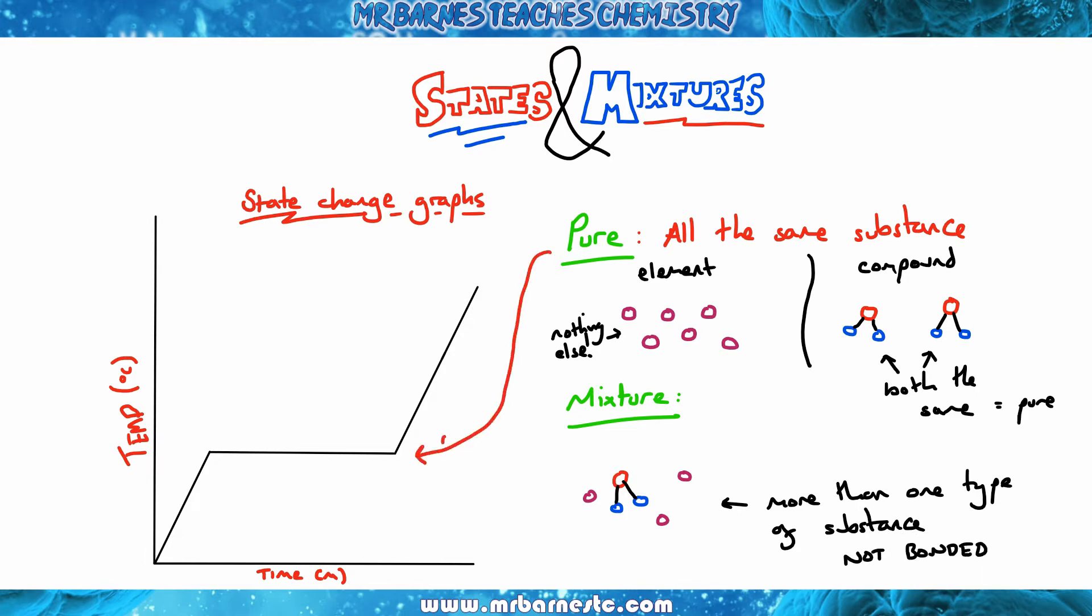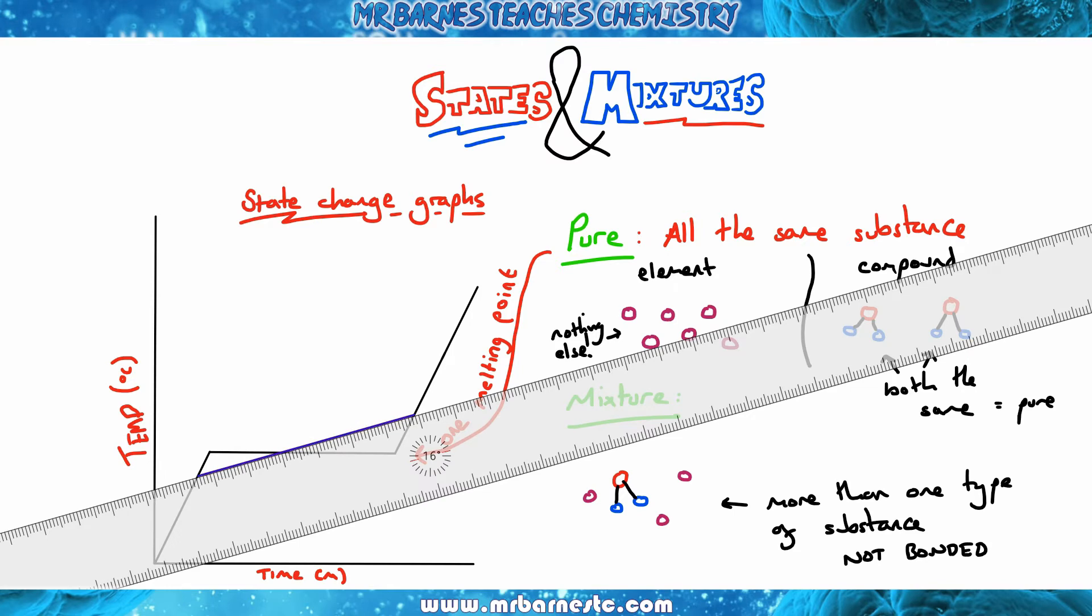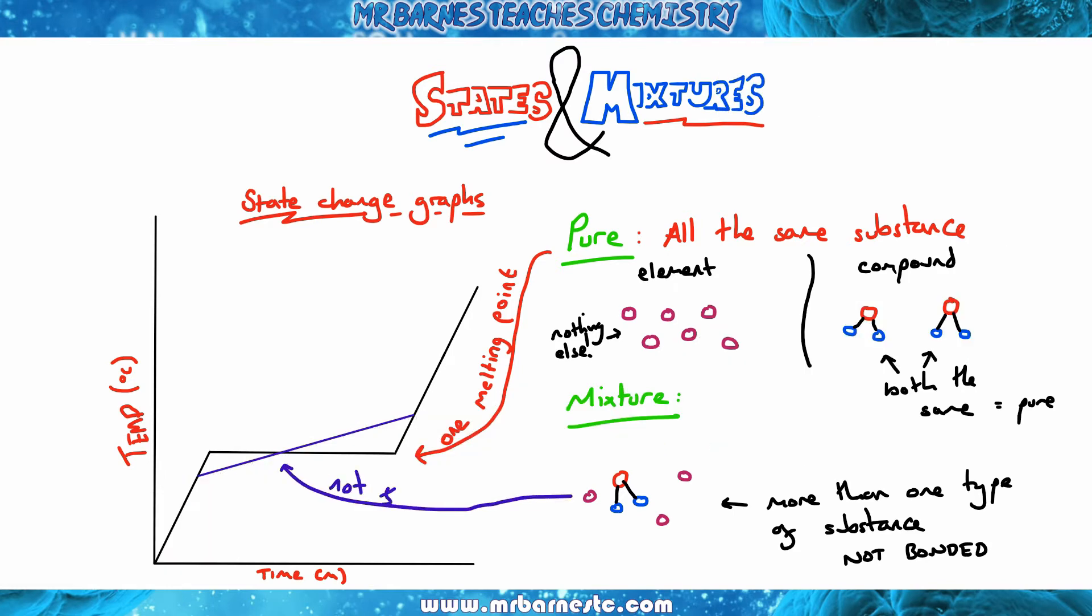On your state change graphs, you will know if something's pure because it will only have one melting point—it will be flat. If you have a diagonal melting point like you can see here, it's not flat, meaning you've got a range of melting points. That tells you it's a mixture.